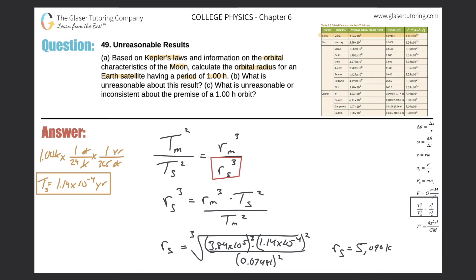This is in kilometers. Just realize, though, that's in kilometers because I used kilometers as my orbital radius for the moon. So this is 5,000 kilometers. That's the radius of the orbit. So it says, what is, so letter B, what is unreasonable about this result? Well, here's the Earth, guys. Here's the Earth.